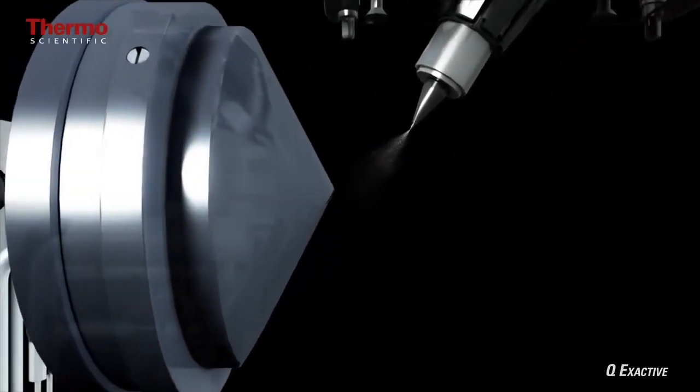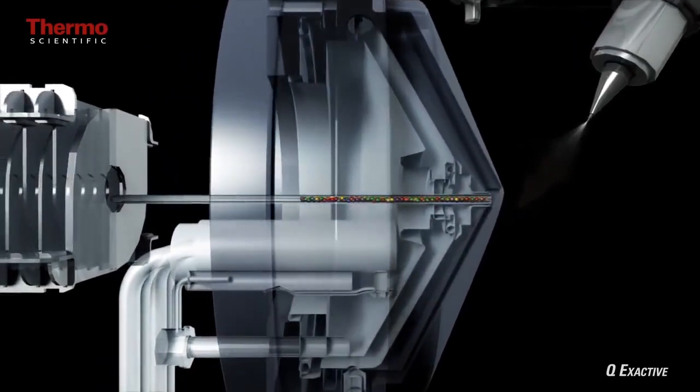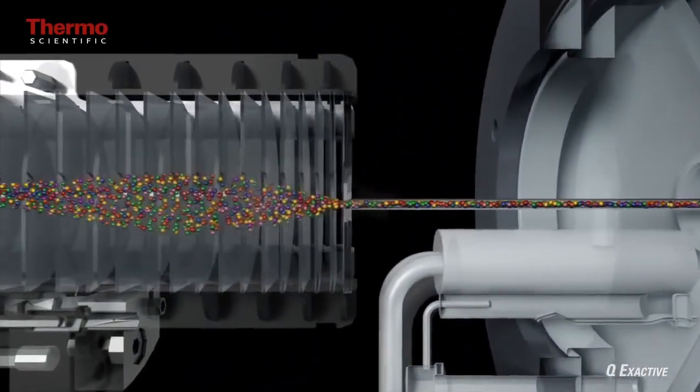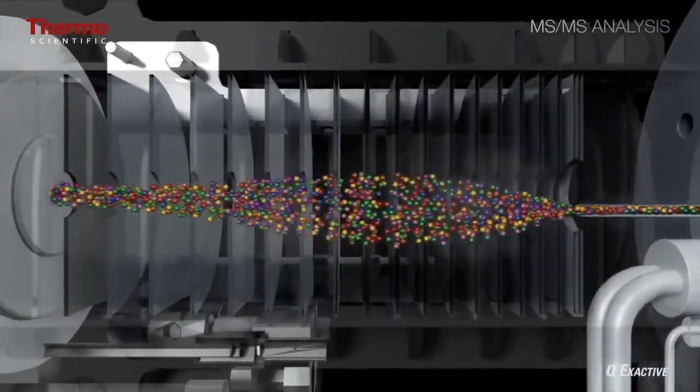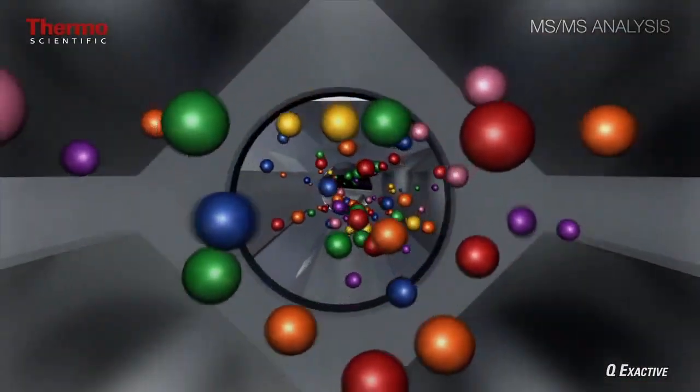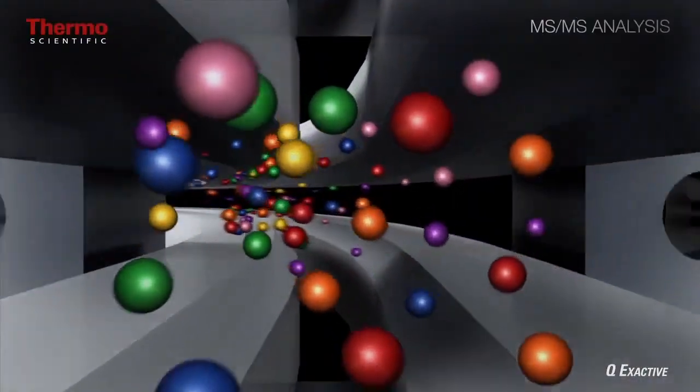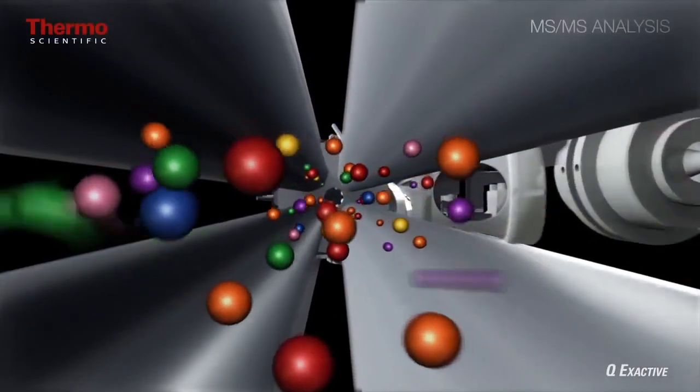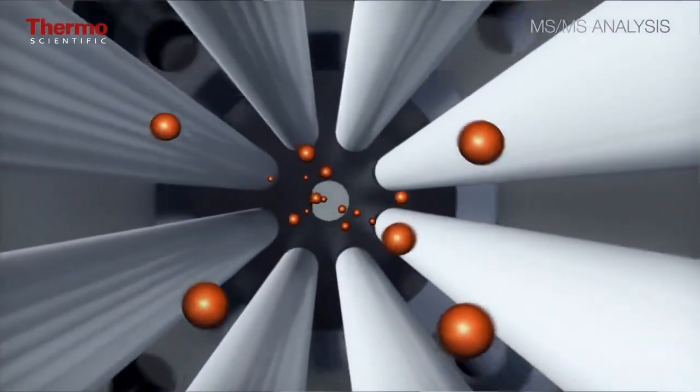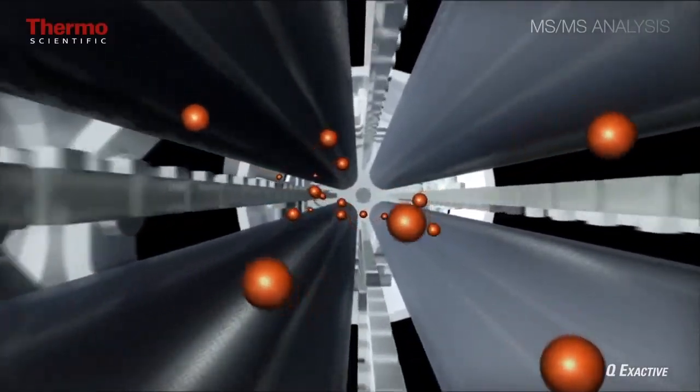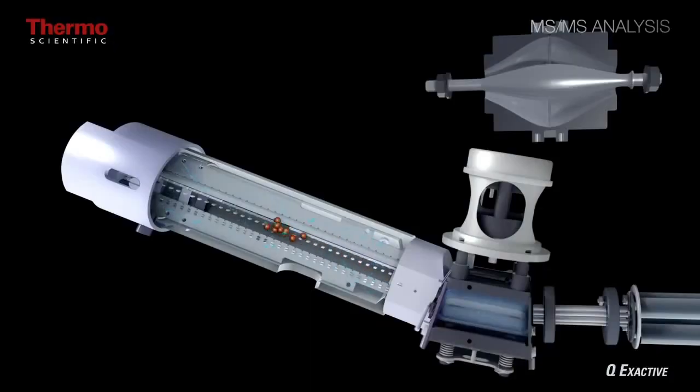Now, this will be an MS-MS analysis or tandem mass spectrometry. Once again, ions are produced at the source. They are then captured and focused for effective transmission. Uncharged neutral species at this point are filtered out and only ions of interest are being selected, in this case being the orange ions. These are then sent into the collision cell for collision-induced fragmentation into fragment or product ions.